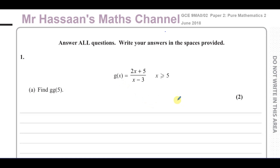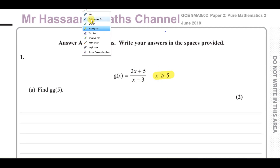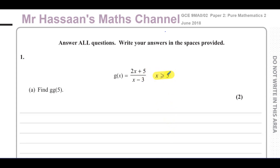This question asks us to find GG(5) — that's part A. They've given us this function, which is a reciprocal function because X is in the denominator. They've also given us some additional information written next to it, which is very important to take note of. It will definitely have some bearing on the question later on — it's not decoration, it's there for a reason. The first part simply says find GG(5).